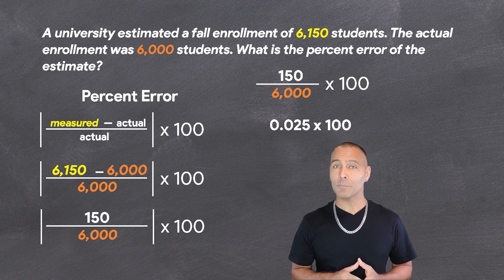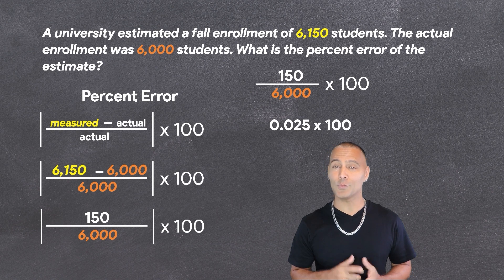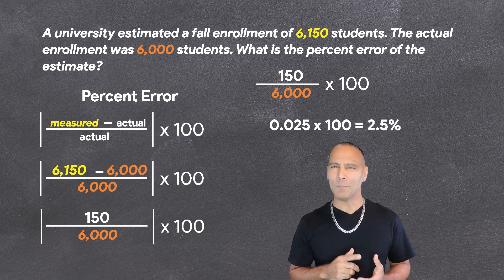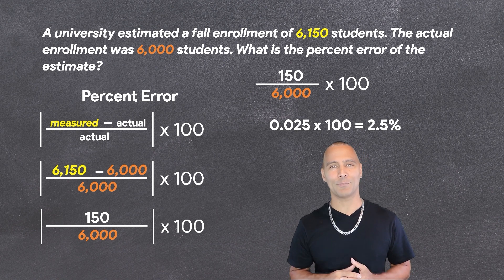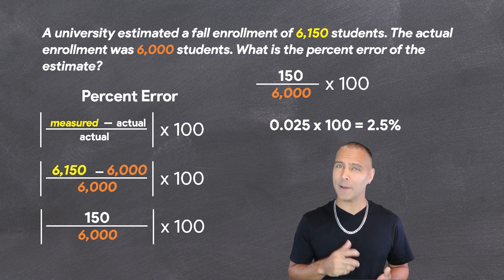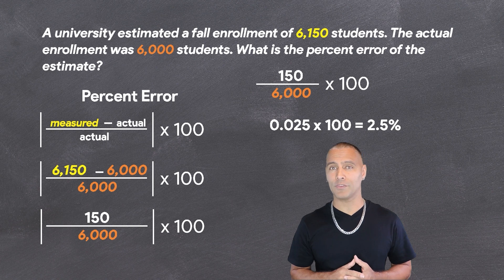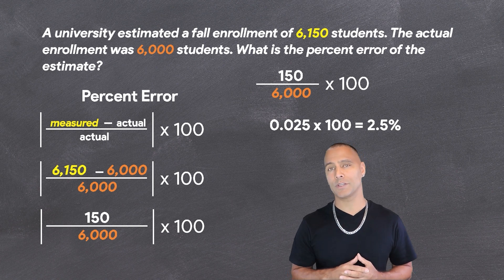Last, we multiply that by 100 to express our answer as a percentage, which is 2.5%. So, the percent error in the enrollment estimate is 2.5%. This means the initial estimate was off by 2.5% compared to the actual enrollment.